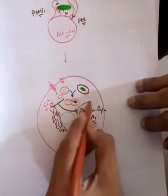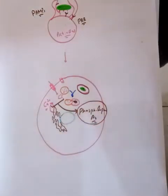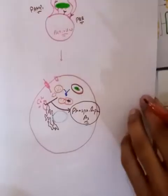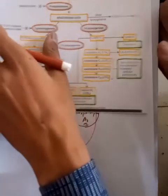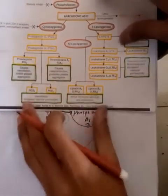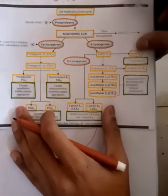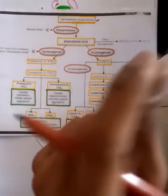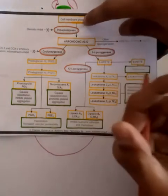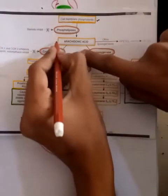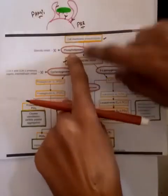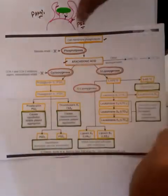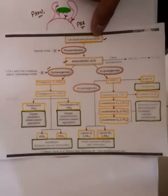Phospholipase A2 has been activated in the neutrophil. This enzyme will convert the cell membrane phospholipids of the neutrophil into arachidonic acid. On arachidonic acid, two important enzymes act: cyclooxygenase (COX) and lipoxygenase (LOX).